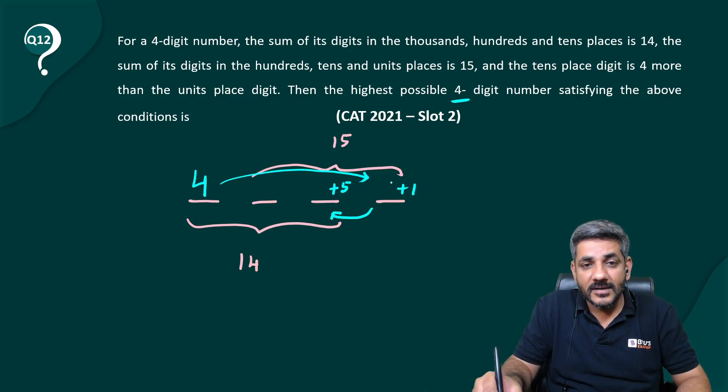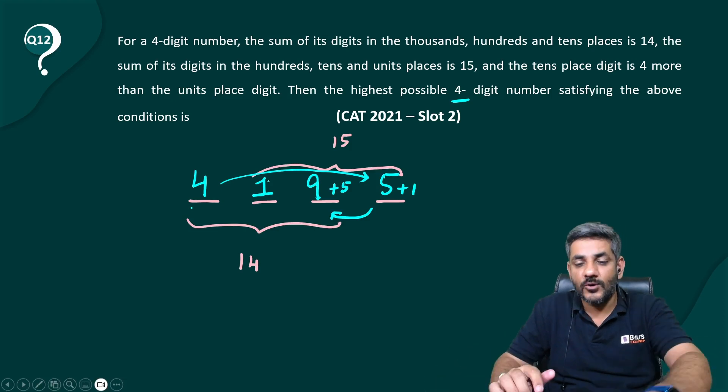Four plus one, five. And four plus five, nine. This is four. This is nine. Sum of these three is 14. This has to be one. That's our number. That's our answer. 4, 1, 9, 5.